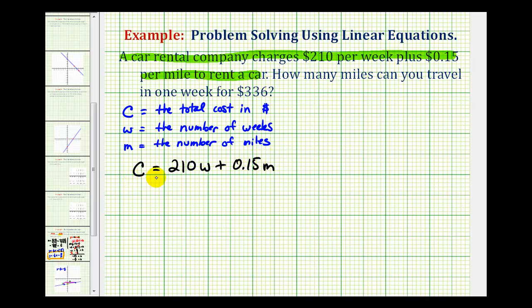And now using this equation here, we should be able to answer the question. We want to know how many miles you can drive in one week for $336. So if the time is one week, we know that W is equal to one. And then if you have a total of $336 to spend, that would be big C.